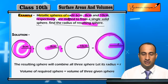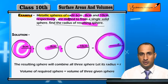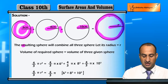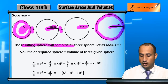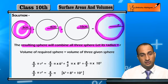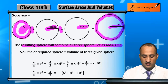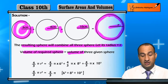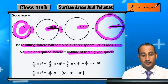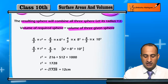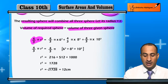The radius of the resulting sphere is r. The resulting sphere combines all three spheres, so let its radius be equal to r. The volume of the required sphere equals the total volume of all three given spheres. The volume formula is 4/3 π r³.